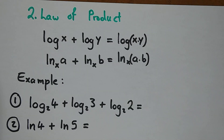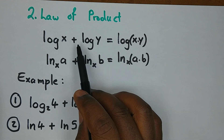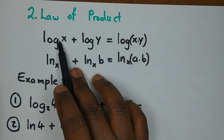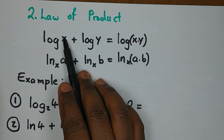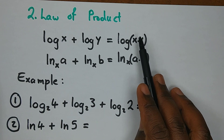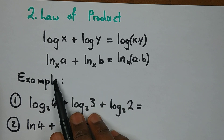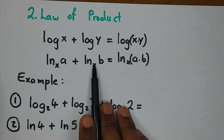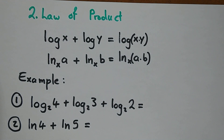The Law of the Product works under two conditions. Condition one: the bases must be the same. Condition two: the two log expressions must be adding. If both conditions are met, we simply multiply the arguments. For example, log x plus log y in base 10 gives log(x·y) in base 10. The same applies to natural logs — if bases are the same and the logs are adding, multiply the arguments.